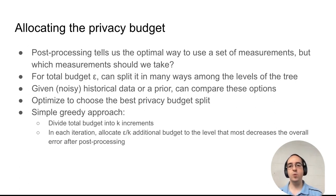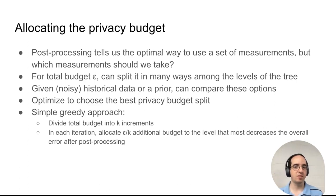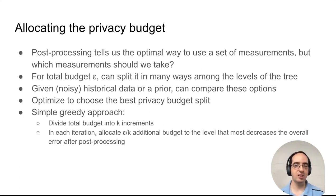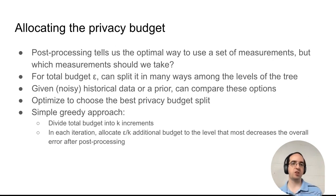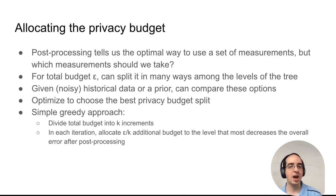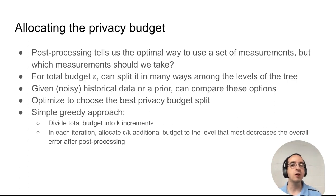We take a simple greedy approach where we take the total privacy budget and divide it into K increments, then proceed iteratively. In each iteration, we allocate epsilon over K additional privacy budget to the level that most decreases the overall error after post-processing. After K iterations, we have an allocation of the privacy budget epsilon to the levels of the tree that has a good error.